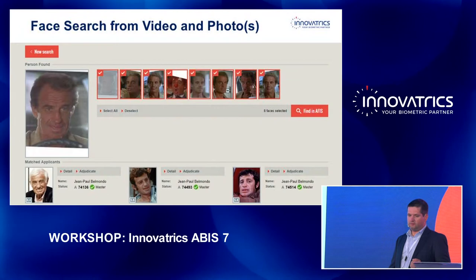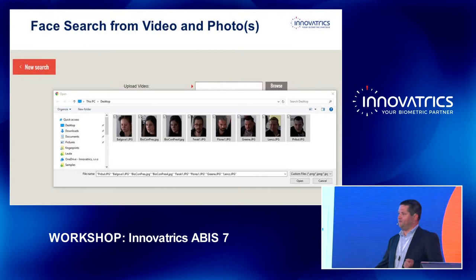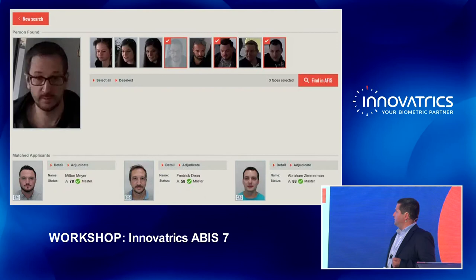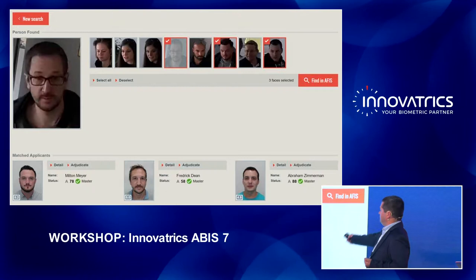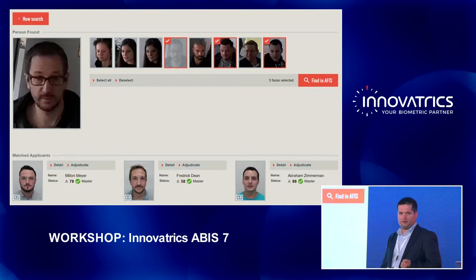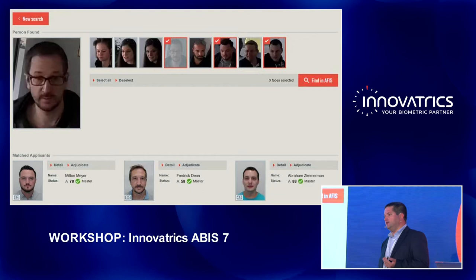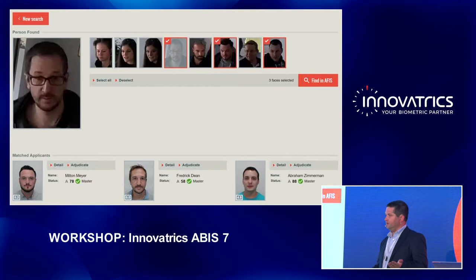You just upload a set of photos in a standard way from your computer. You can select which photos you would like to identify, and you get a list of candidates. You can also upload multiple photos of the same person — if you have photos from CCTV cameras or a crime scene — and it will automatically increase the accuracy of the system.